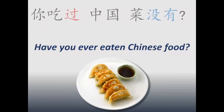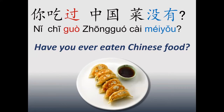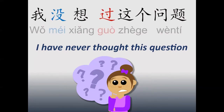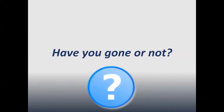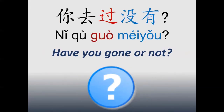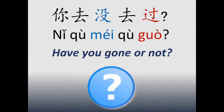Have you ever eaten Chinese food? 你吃过中国菜没有? I have never thought about this question: 我没想过这个问题. Have you gone or not? 你去过没有? Or we can also say 你去没去过, using the structure of a verb in affirmative and negative.